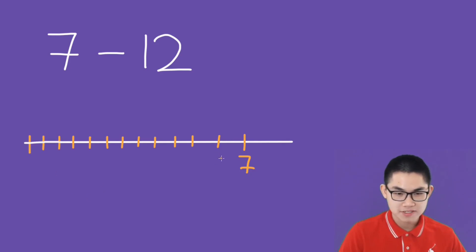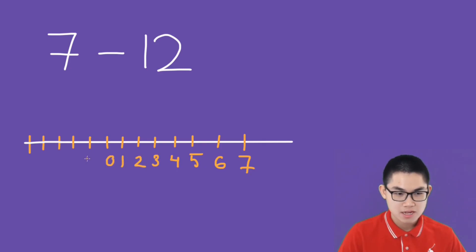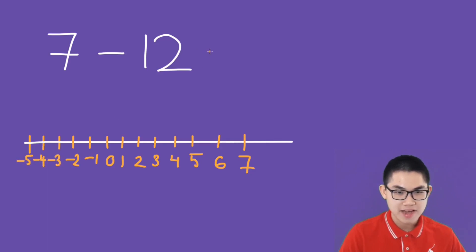So 7, then we have 6, 5, 4, 3, 2, 1, 0, negative 1, negative 2, negative 3, negative 4, and negative 5. So the final answer will be negative 5.